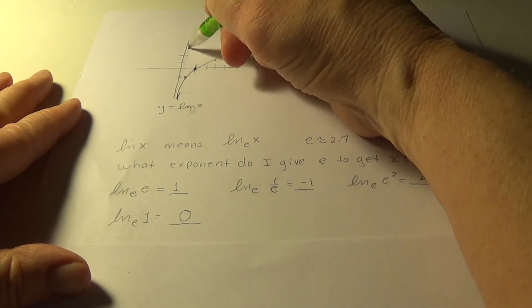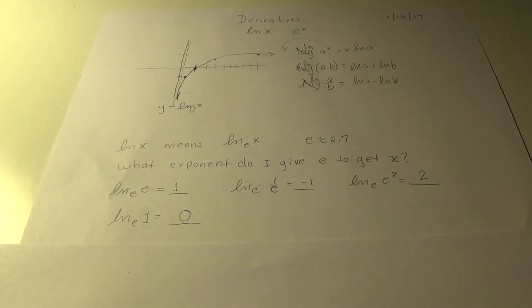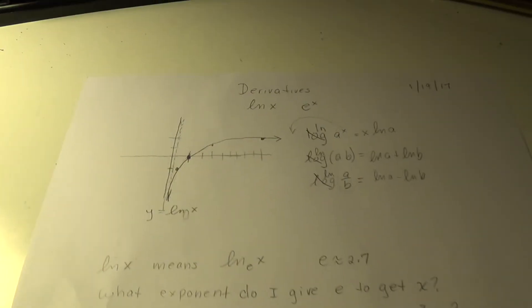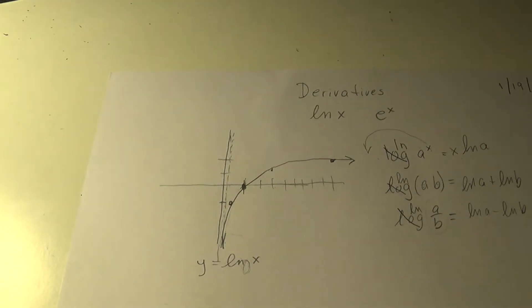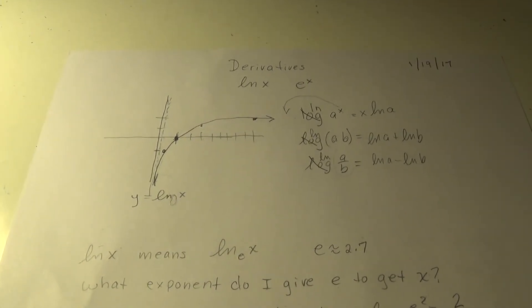Alright. And this is asymptotic. It never touches this. Alright. So let me go back up here. You can see it a little better. Does that look familiar? Alright. That's the y equals ln of x curve.